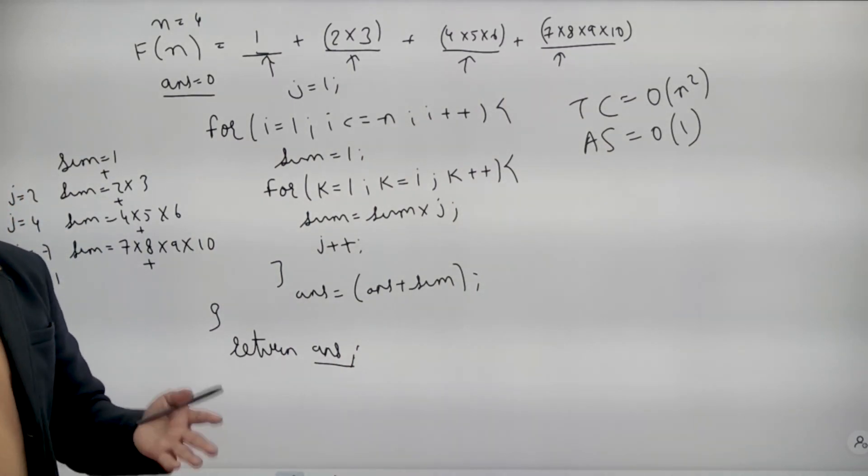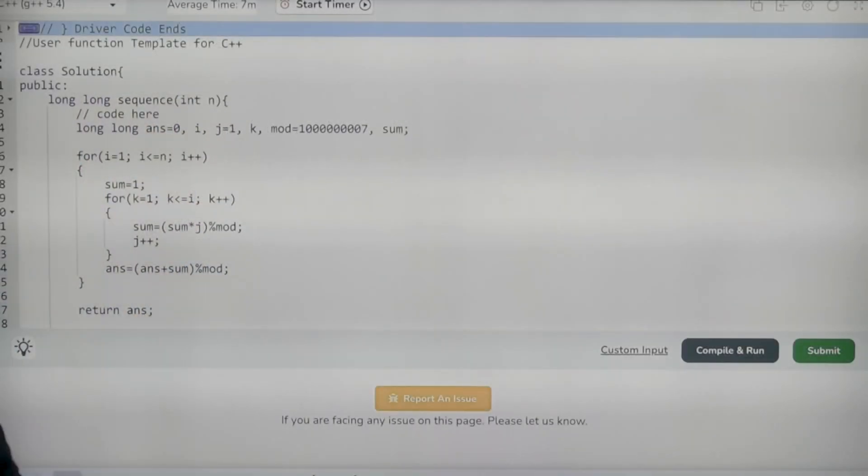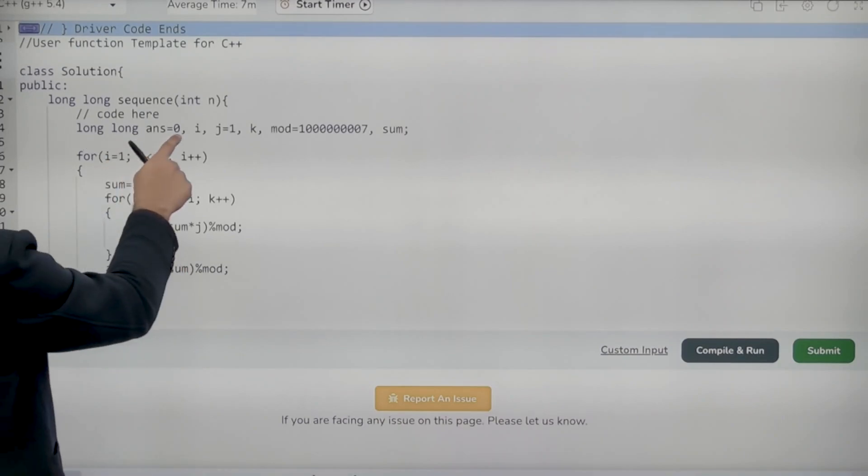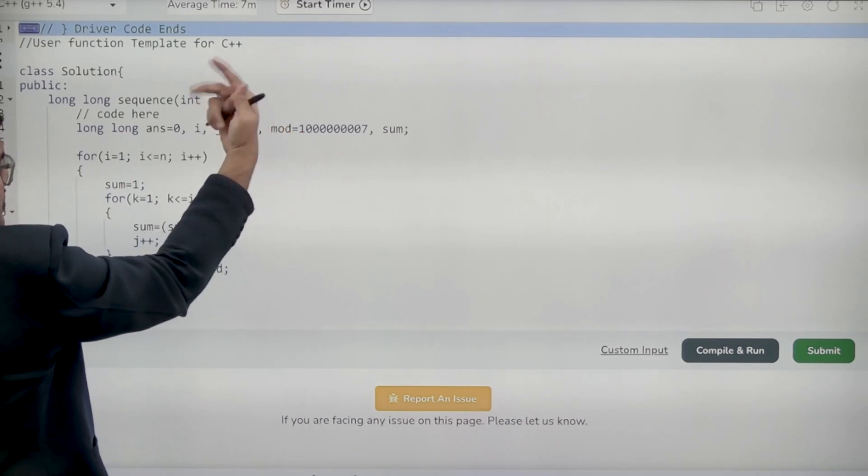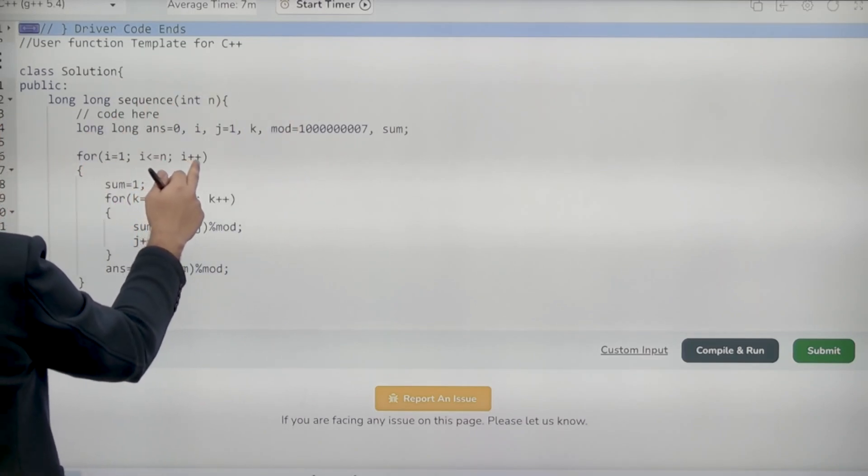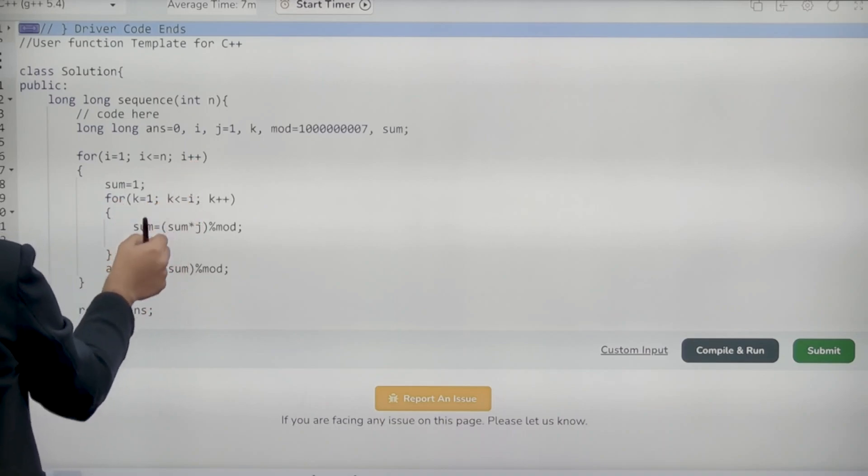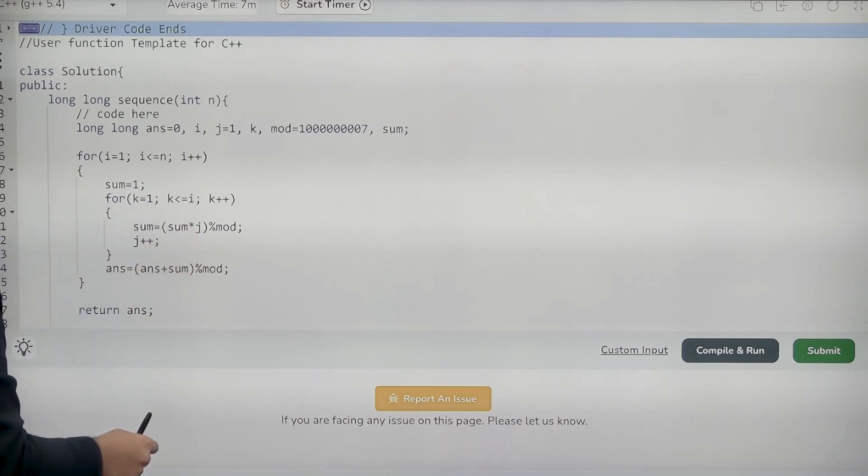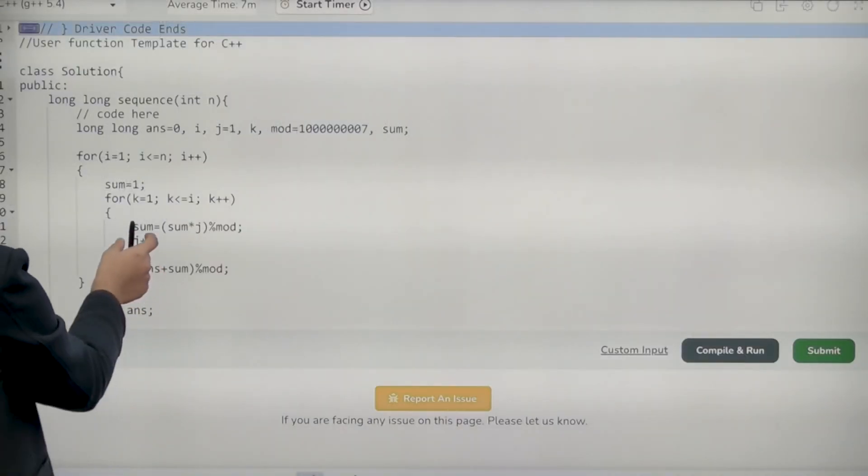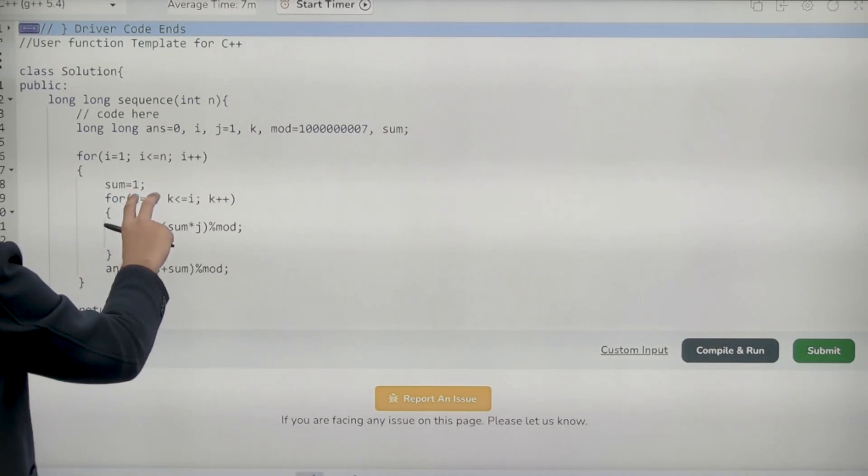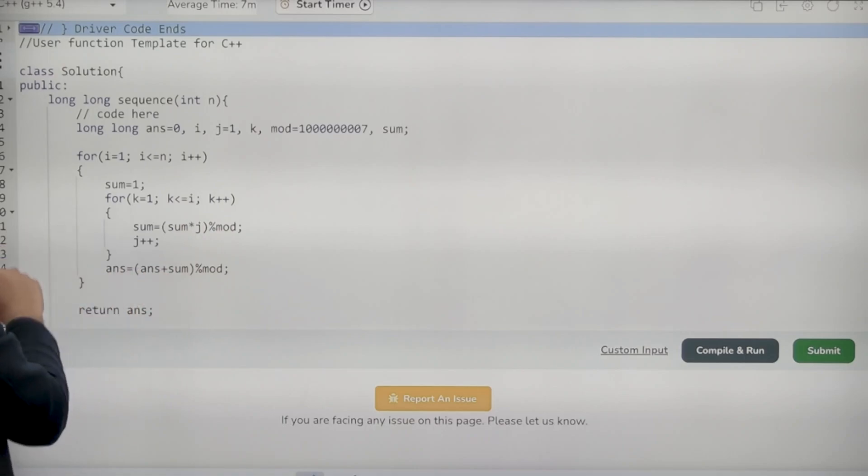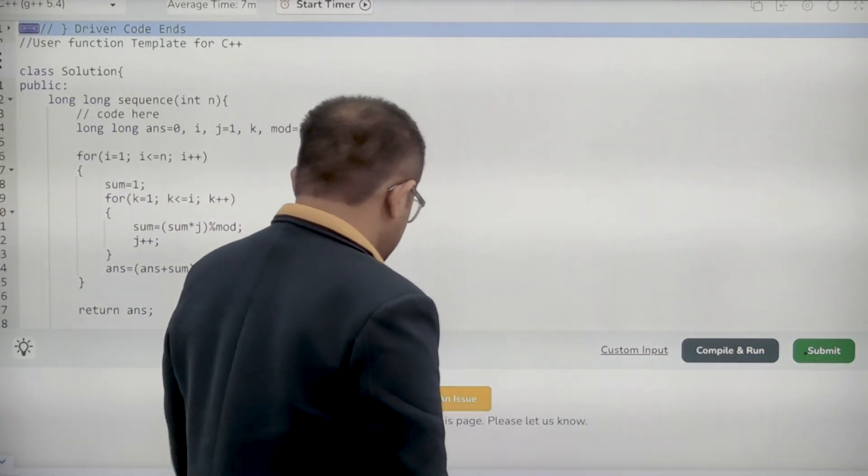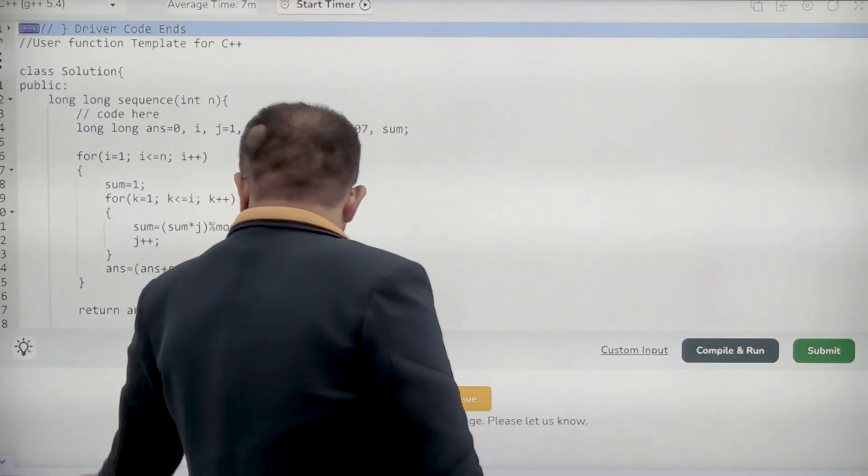Now let's look at its actual code implementation and then submit it. So if you look at the actual implementation, it is answer equals to 0. Also I have taken one mod value because we have to take mod 10k power 9 plus 7 as the answer can be very large. This outer for loop is to add up the n terms. Inner for loop is to calculate the ith term which is nothing but sum into sum equals to sum into j which we did here. And every time j plus plus and when the ith term is calculated, we add it to the answer. And every time we take modulo mod and finally return the answer. Let us submit it.